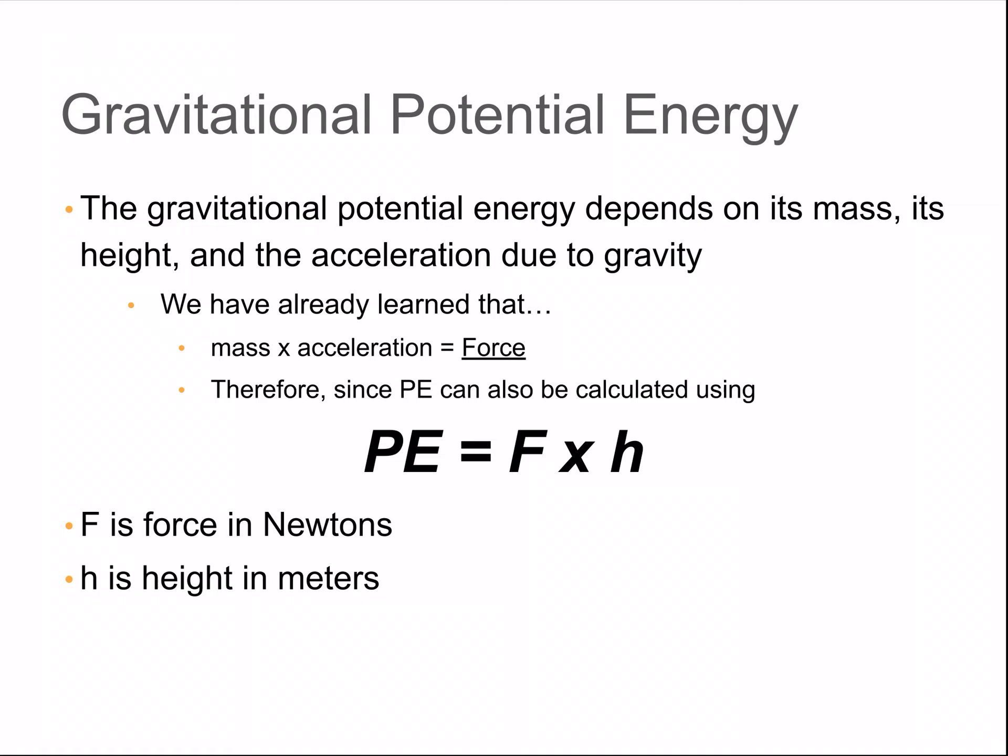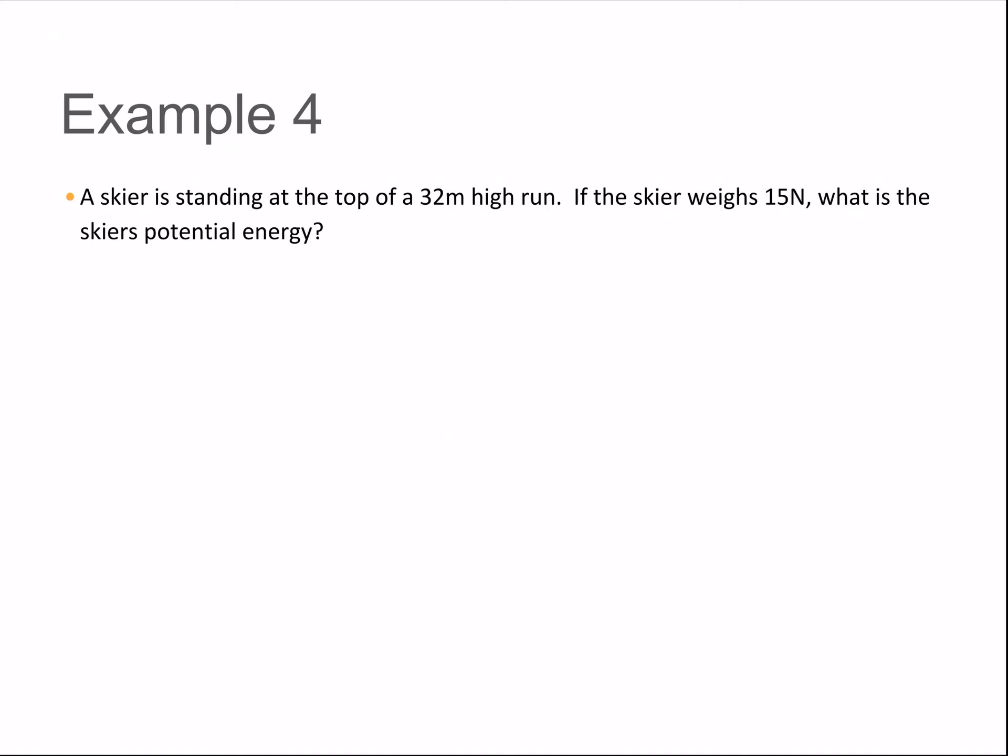So there is one other way that you can do calculations with potential energy. And it's really the same, and you can think of it as one step already done for you. This is the equation that you'll use. Potential energy is equal to force times the height. So remember how we calculated force is mass times acceleration. So we're already knocking off the mass times gravity calculation, and then just taking that force and multiplying it by the height. Of course, we have an example calculation for you guys to try out. A skier is standing at the top of a 32 meter high run. If the skier weighs 15 newtons, what is the skier's potential energy? Pause the video, calculate it. When you're ready for the answer and explanation, press play.